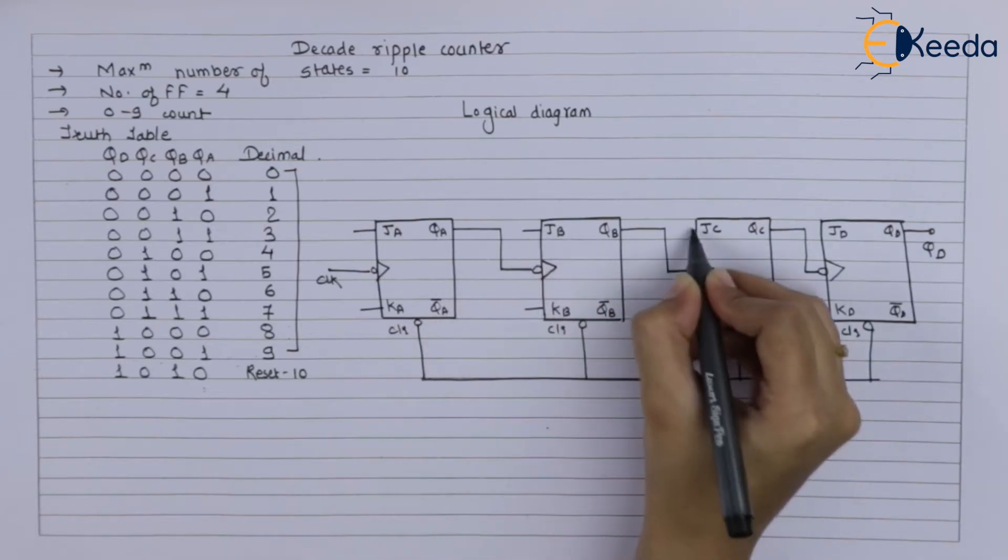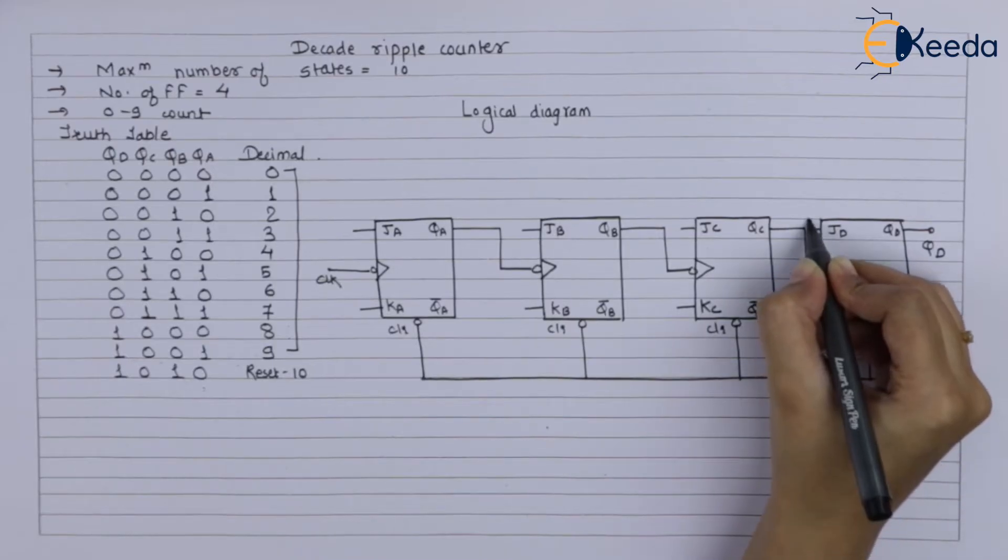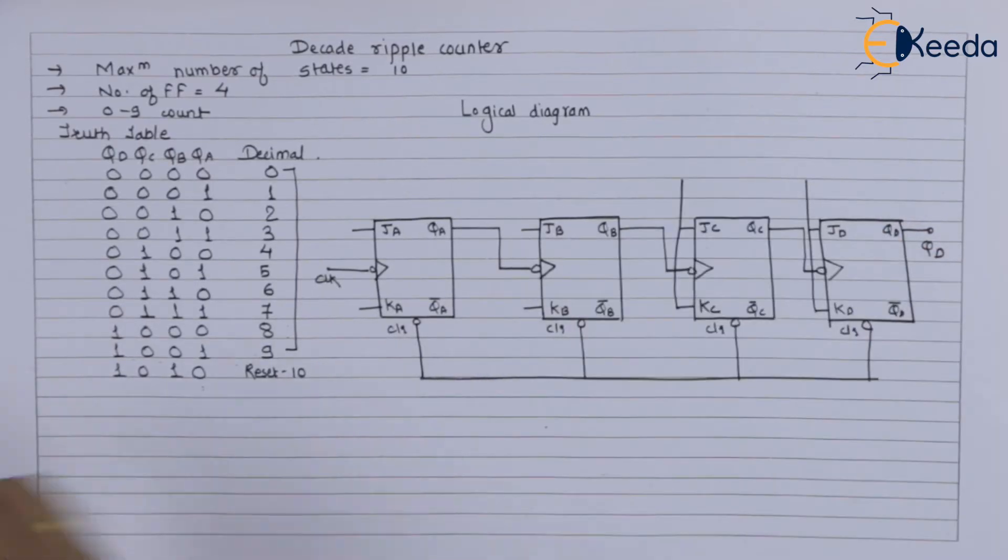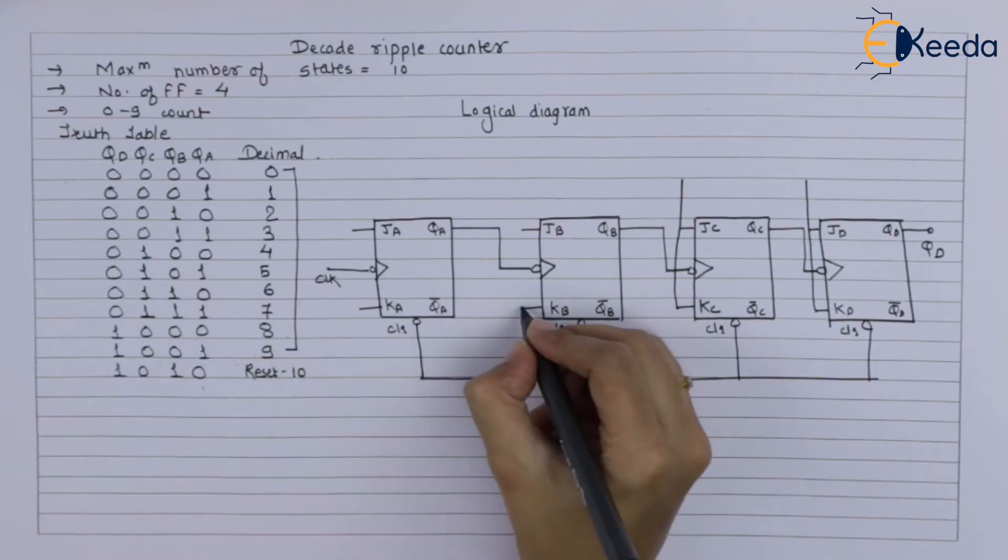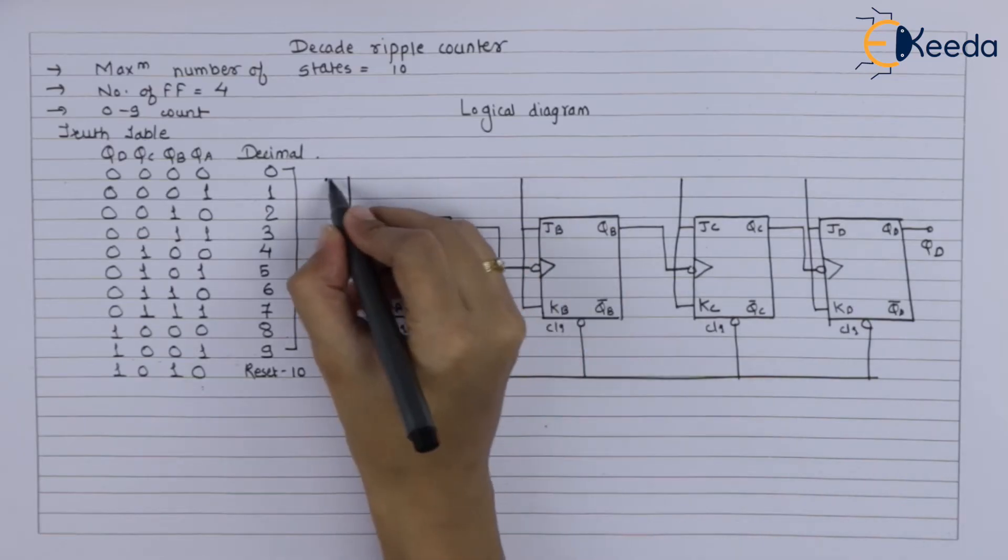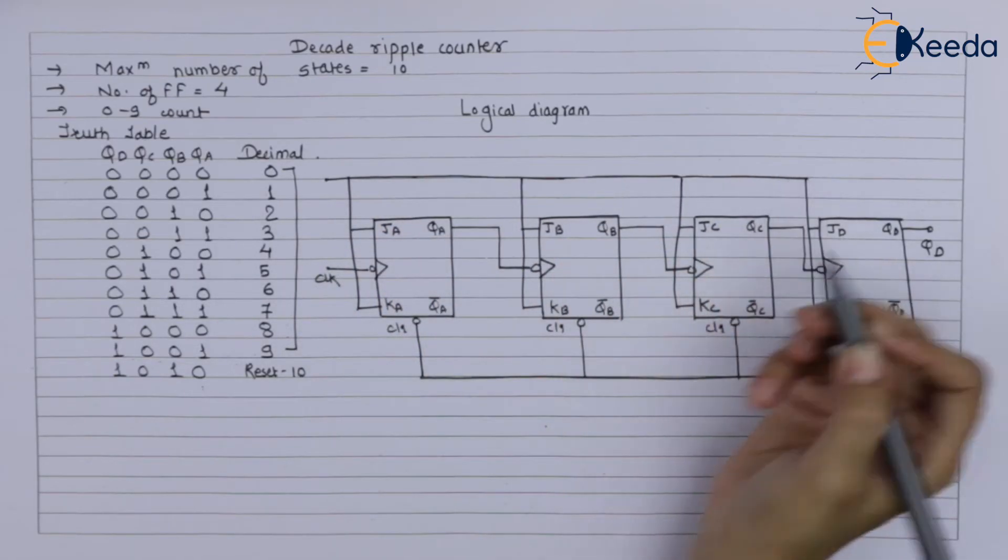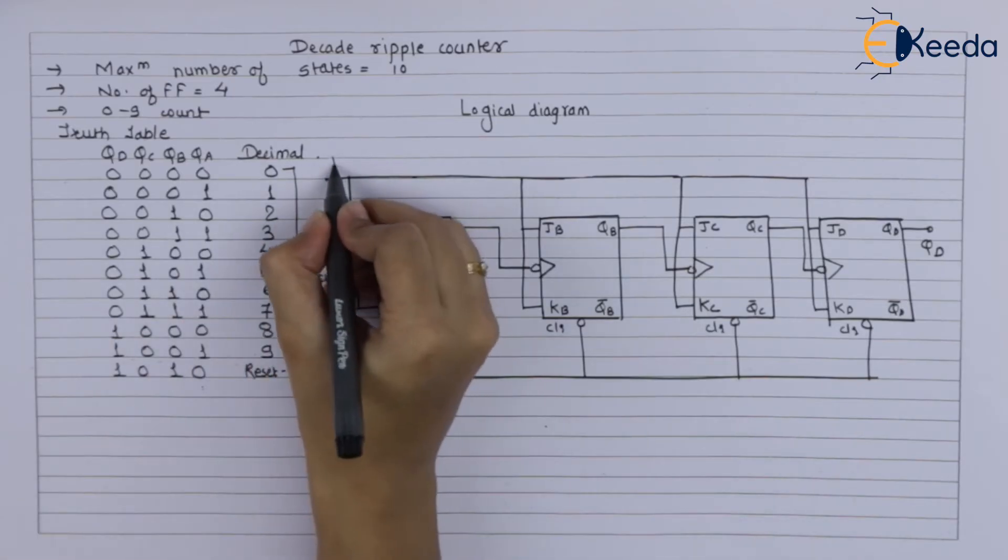apply all logical inputs to logic 1. Now we will connect all inputs to logic 1. So logic 1 line you have to draw. In this way, you have to draw logic 1 line.